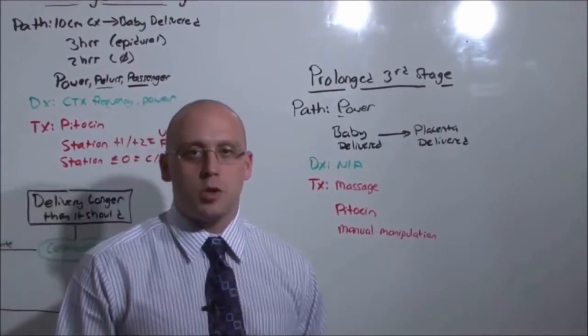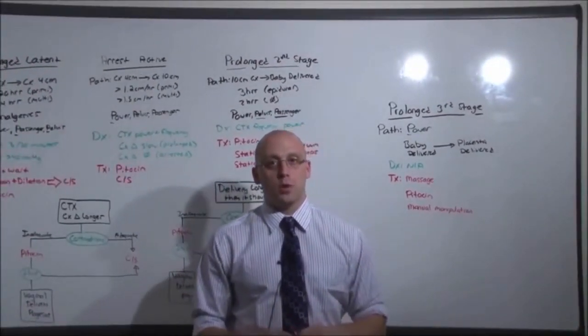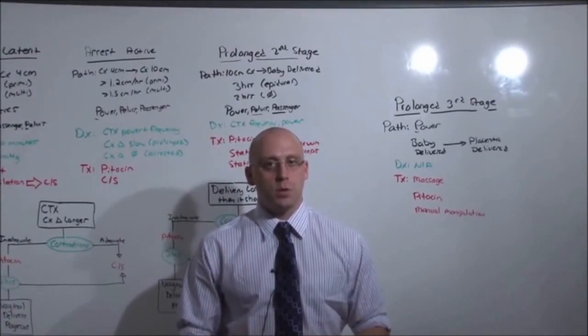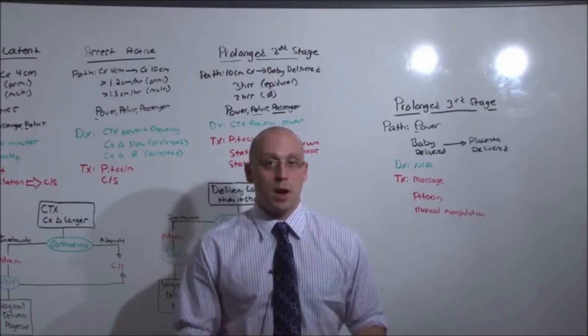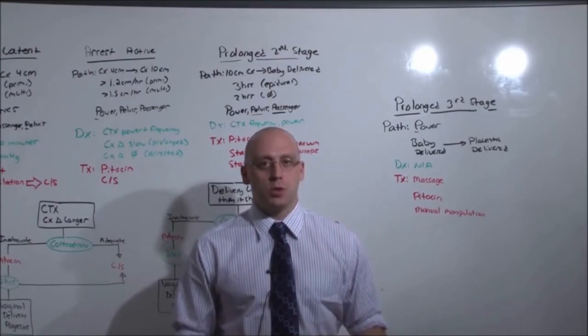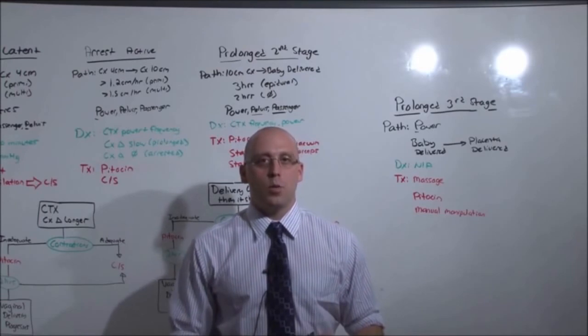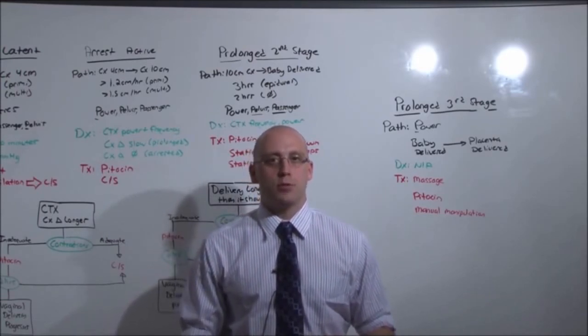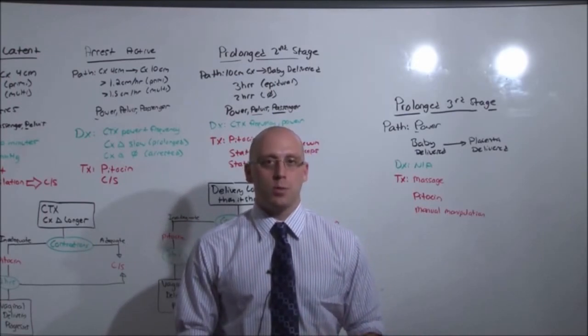All right, so in the last lecture, we learned some vocabulary. In this lecture, we learned what happens when things go wrong. Hopefully you detected a regular theme. You're always going to assess contraction frequency and power. The only thing that we can adjust is the power. Use Pitocin. If it's any other issue, it's going to have to be a surgical intervention to get baby out. You cannot let any one phase of delivery go on for too long. It puts baby at risk and you need that baby out. That is abnormal intrapartum events.